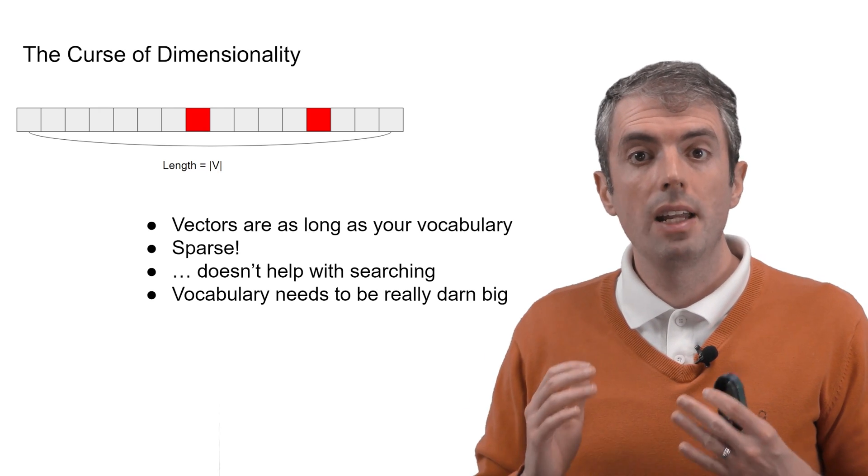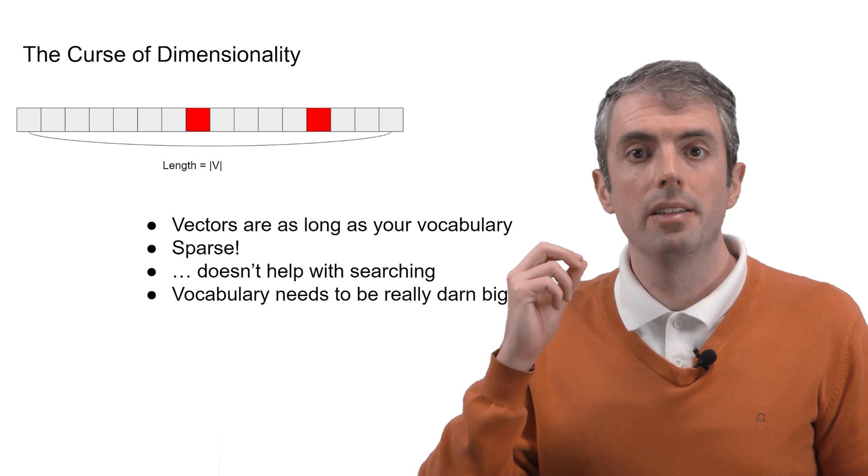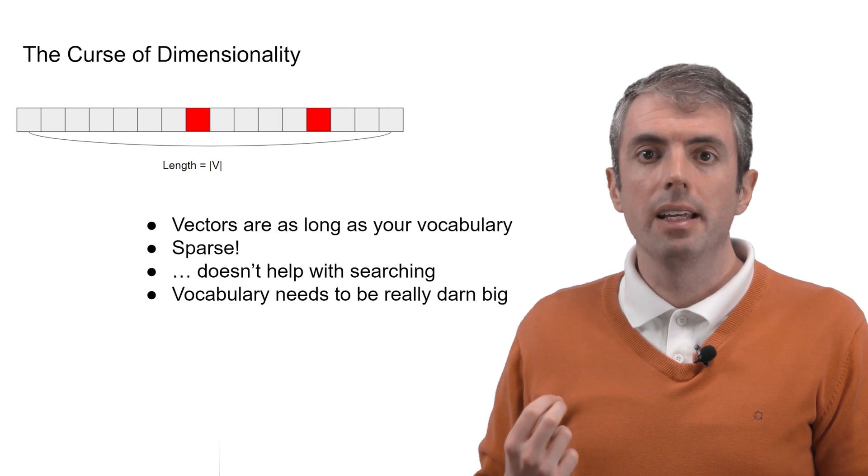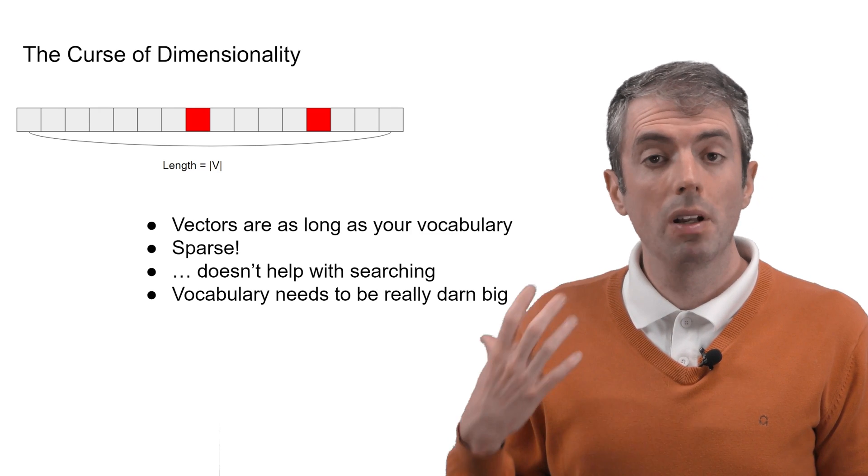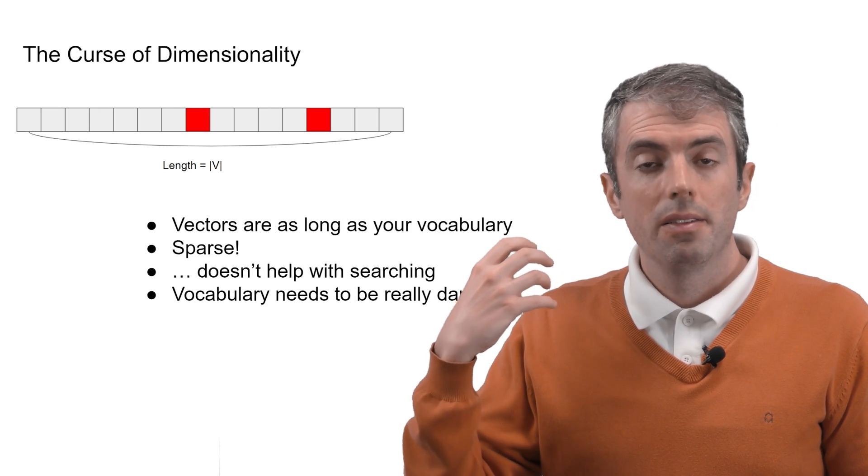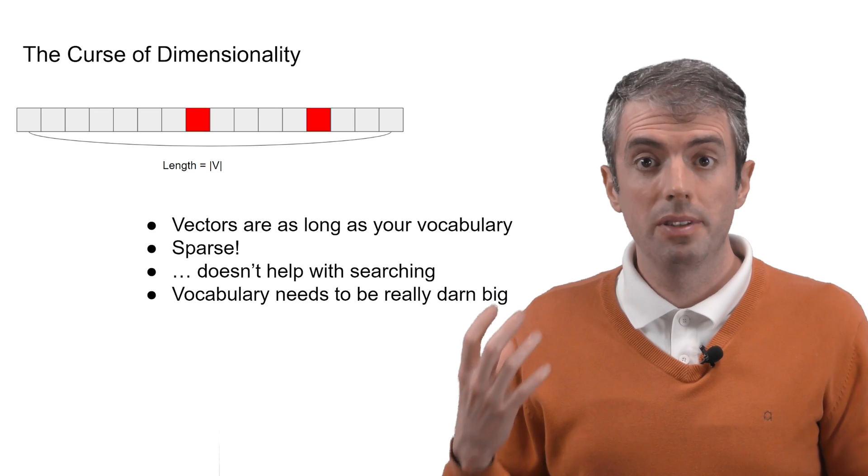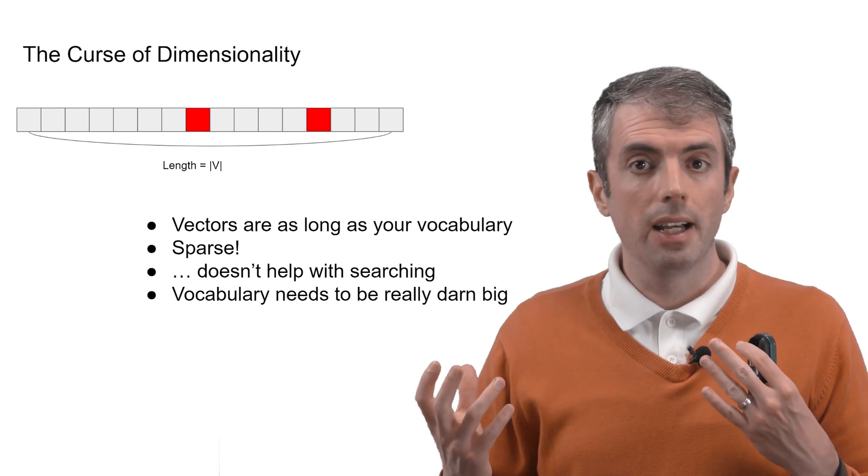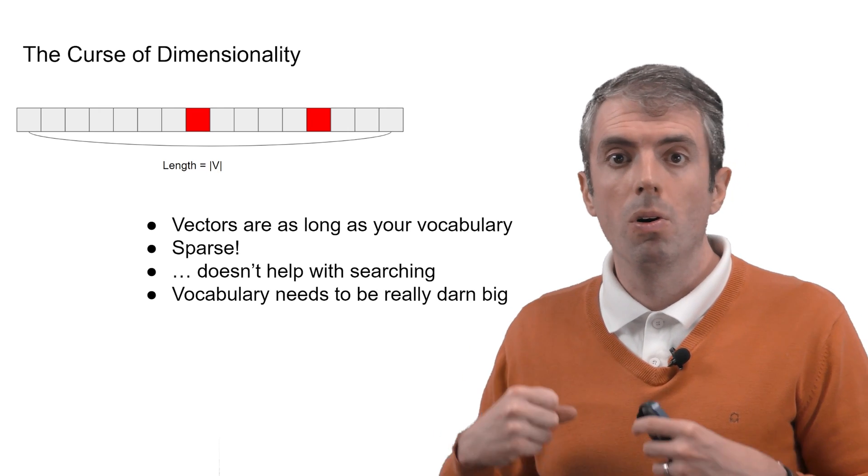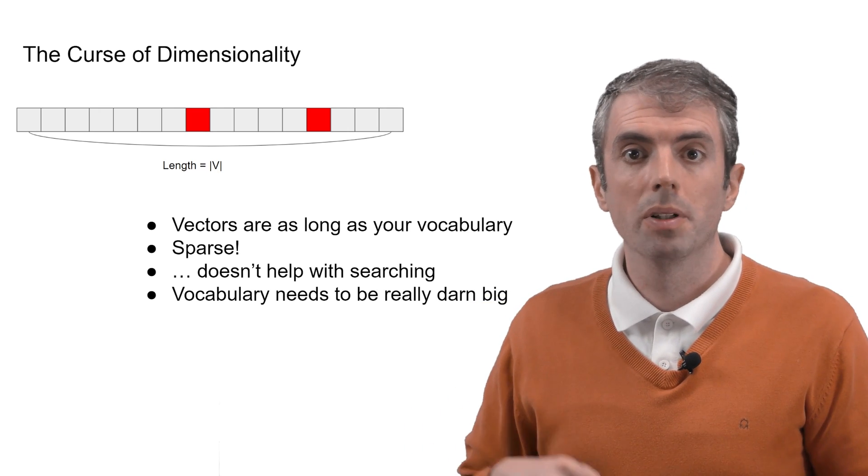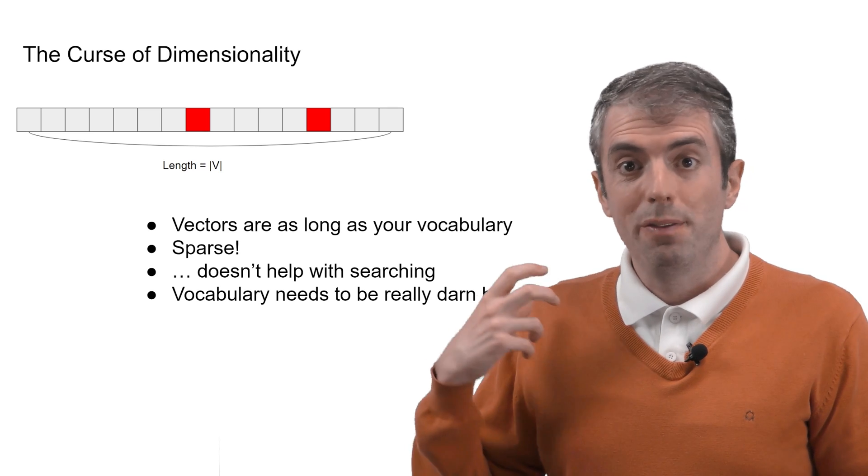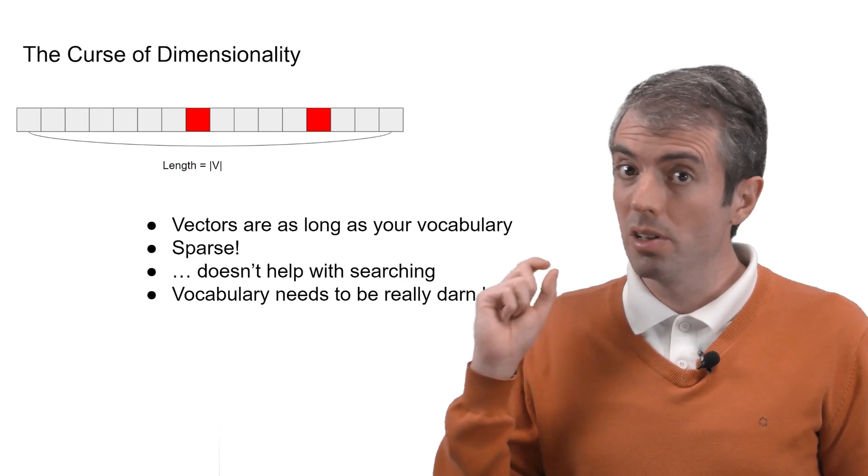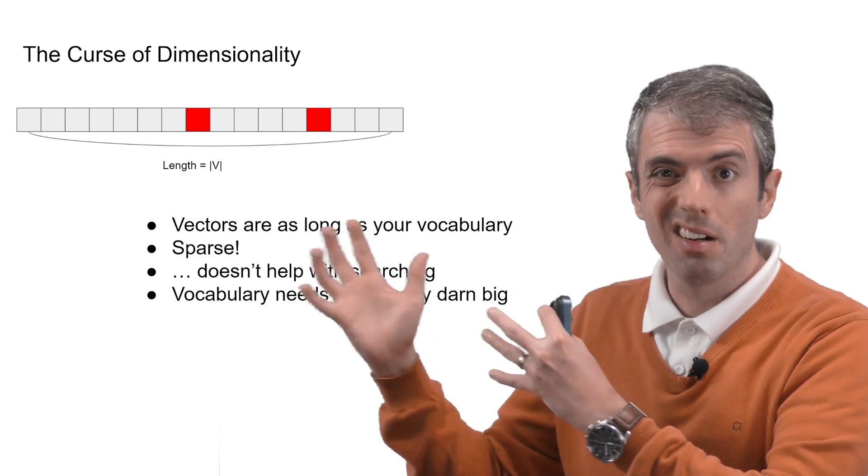First, the dimensionality is in the tens or even hundreds of thousands. There are many, many words in English, particularly if you want to be able to match very specific terms that you see in questions like the Treaty of Westphalia or Transposon or Uluru or Murasaki. If you want to be able to match these very specific high TF-IDF weight terms, you're going to need to have a really large vector.